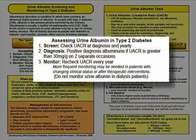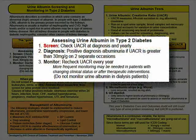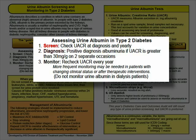Screen for albuminuria by checking a UACR at diabetes diagnosis and yearly thereafter. A diagnosis of albuminuria is made when the UACR result is at least 30 mg per gram on two separate occasions.